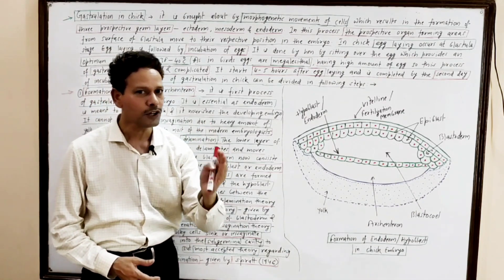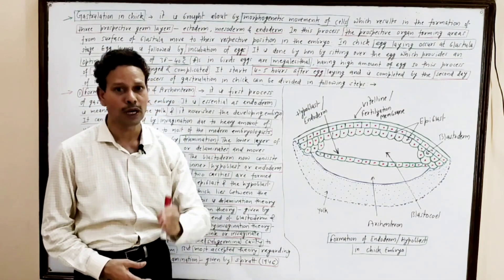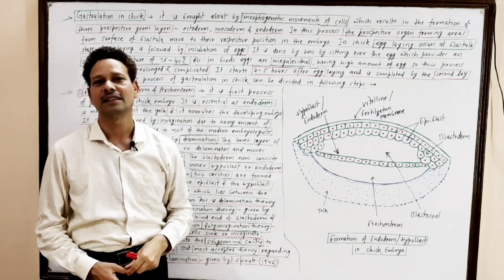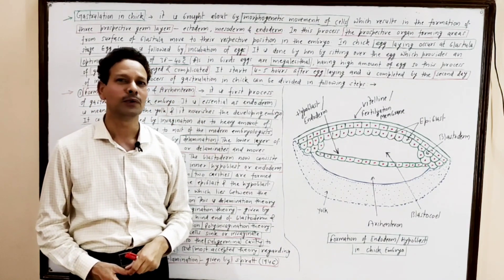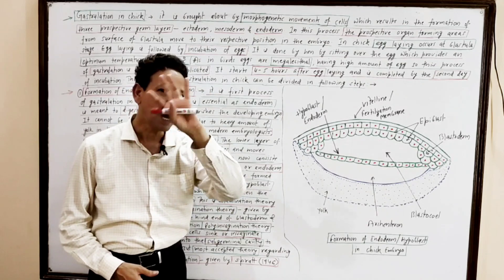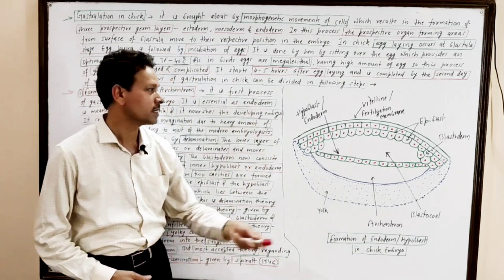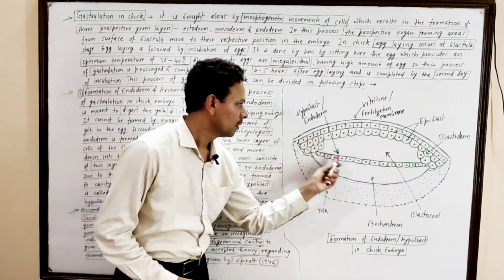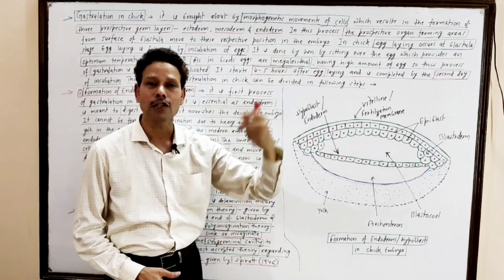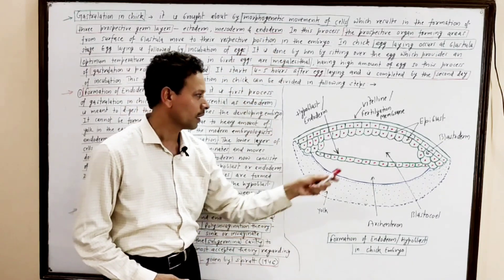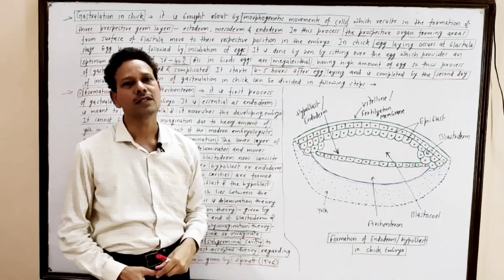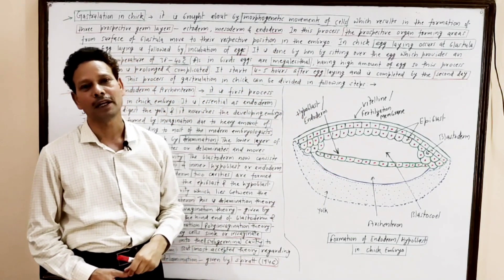After the formation of blastula — discoblastula — that is a single-layered embryo having a mass of cells, that is blastula. And in that blastula, there is a cavity, and that cavity is the sub-germinal cavity.